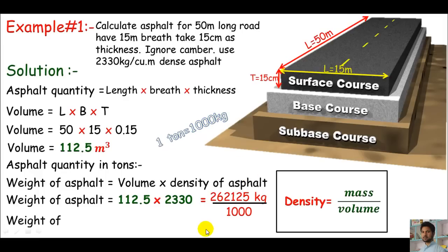This will give you the answer in tons, which is 262.125 tons. This is really awesome. For this highway construction, we need 262.125 tons of asphalt.